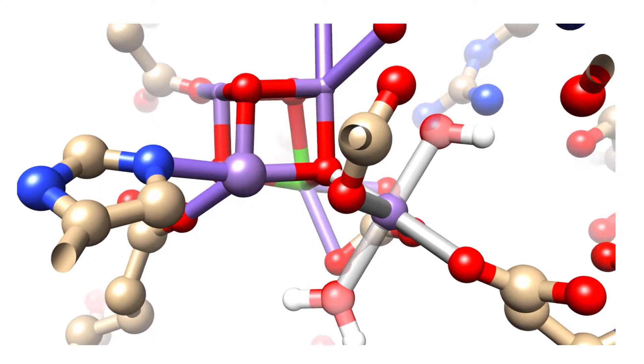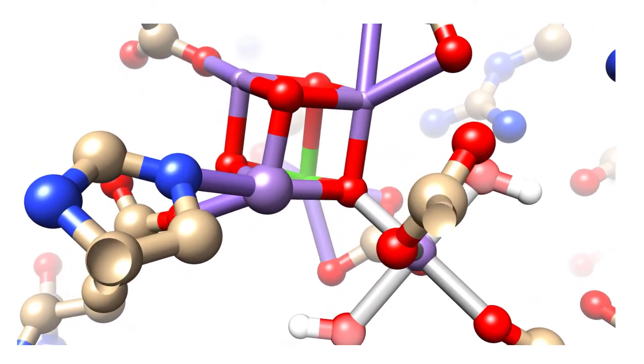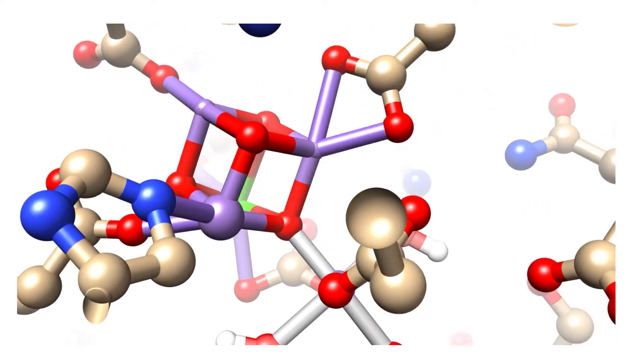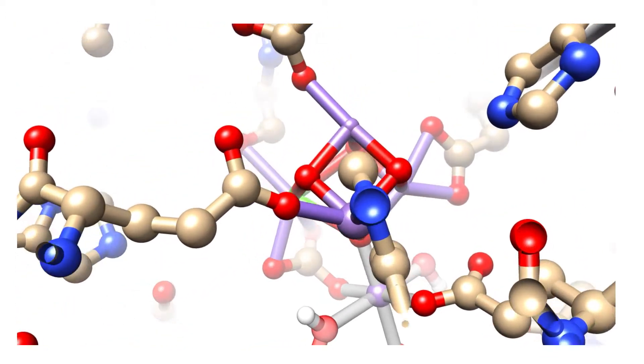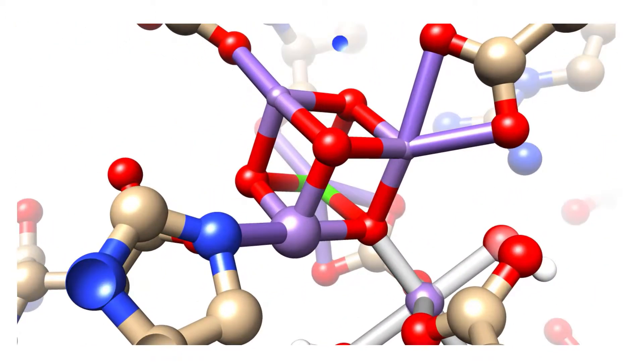Shown here is manganese 2. It also has an octahedral geometry. It has a glutamic acid as a ligand, a histidine, 3 oxygens, and a possible water counting to 6 ligands.